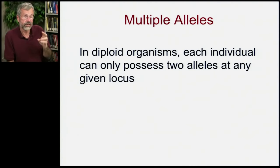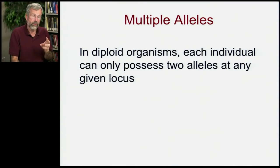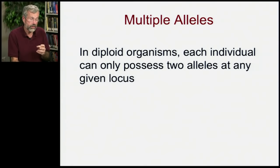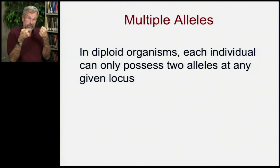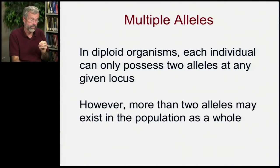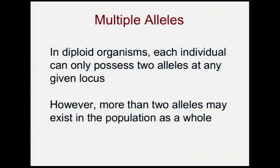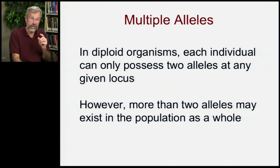We know that genetics is far more complicated than that. The first thing to get familiar with is the fact that there can be multiple alleles. In diploid organisms, each individual can only possess two alleles at any given locus — say, the genes on chromosome 21 from mom and from dad. But within a population there can be many more than just two alleles. For the immune system, you may have two particular alleles that protect you against certain diseases, but other people may have very different alleles at those same loci. So the population can have far more alleles than any one individual can possess.